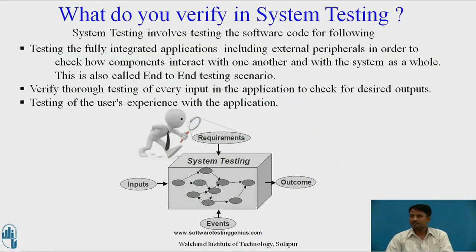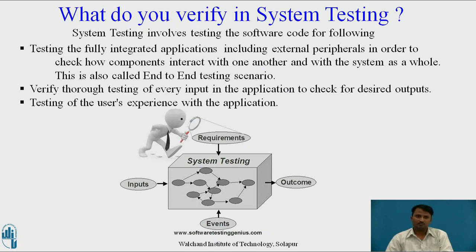System testing involves testing the software code for the following: testing the fully integrated applications including external peripherals in order to check how components interact with one another and with the system as a whole — this is also called end-to-end testing. It also verifies thorough testing of every input in the application to check for desired output, and tests the user's experience with the application.